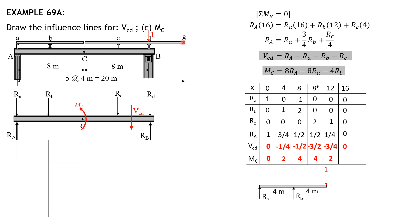When x equals 20, summing moment about C: r sub small c times 4 plus 1 times 4 equals 0, so r sub small c is negative 1. R sub small a and r sub small b are 0. R sub A: 0 plus 0 plus one-fourth times negative 1 equals negative one-fourth. Shear in CD: negative one-fourth minus 0 minus 0 minus negative 1 equals positive three-fourths. M sub C: 8 times negative one-fourth minus 0 minus 0 equals negative 2.